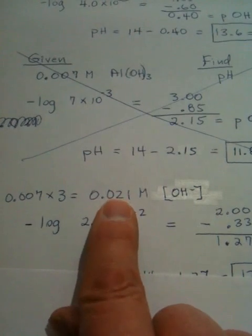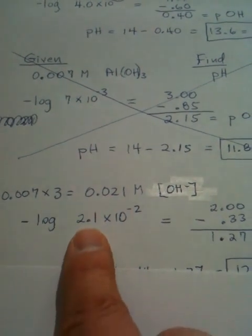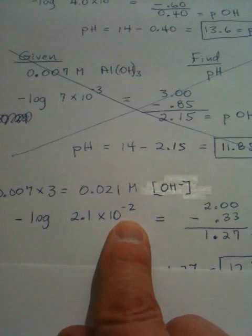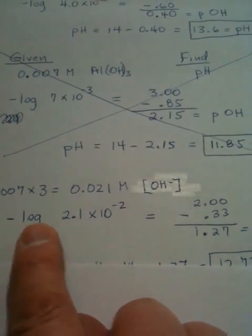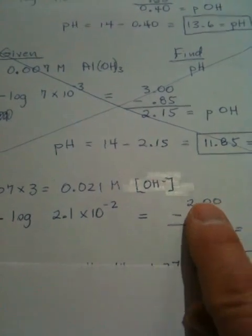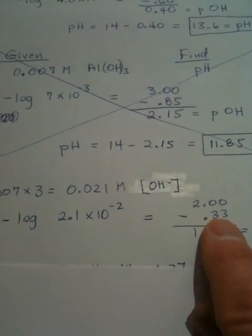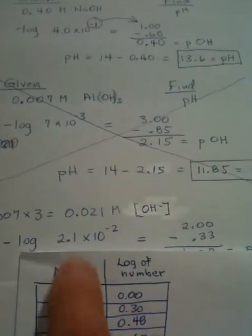When we change this guy into scientific notation, we come up with 2.1 times 10 to the minus 2. Then, we're going to take the minus log of that.